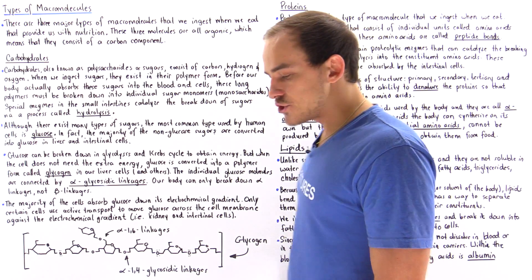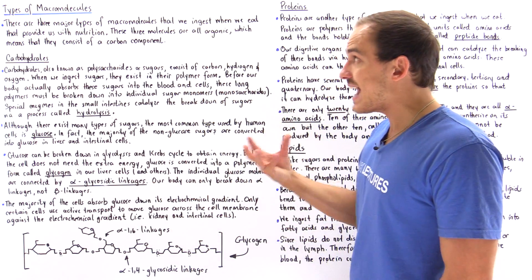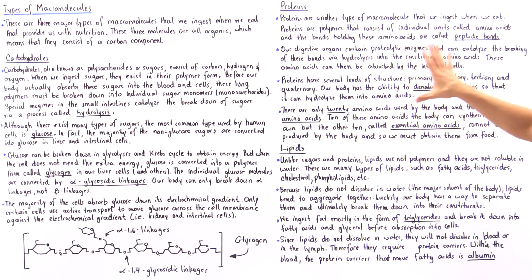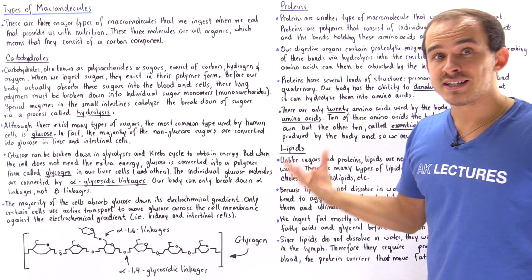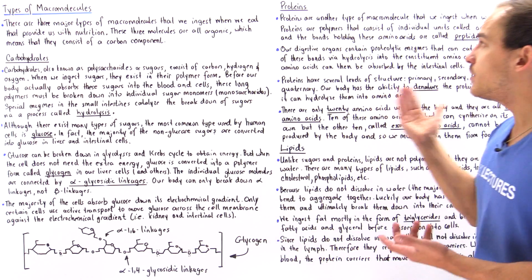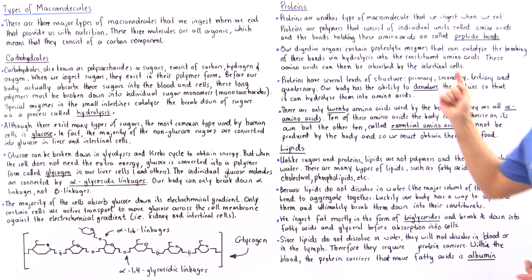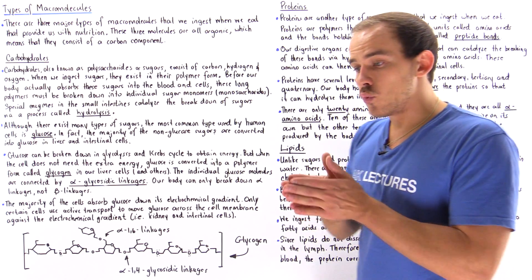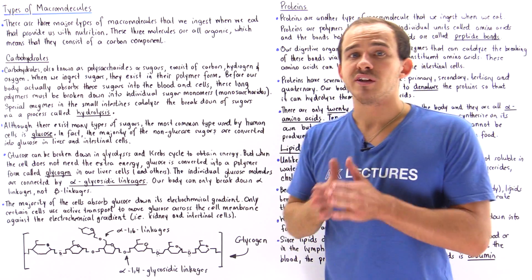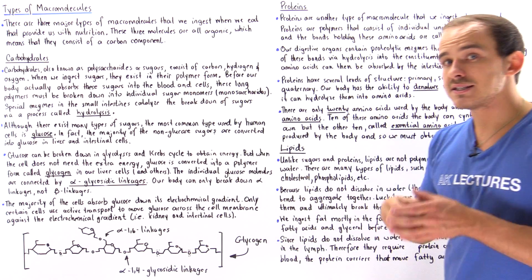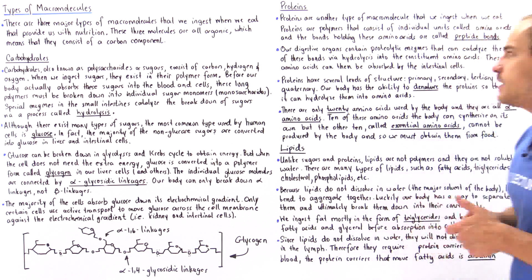Let's move on to proteins — another type of organic macromolecule that is also a polymer we ingest when we eat. Proteins are polymers consisting of individual units called amino acids, which contain not only oxygen, carbon, and hydrogen, but also nitrogen. The bonds that connect these individual amino acid monomers are called peptide bonds, and proteins are usually called polypeptides, meaning they consist of many peptide bonds and many amino acids.